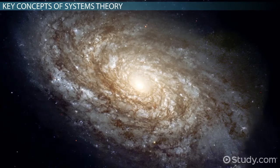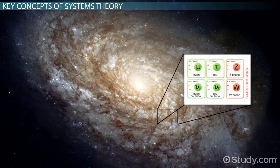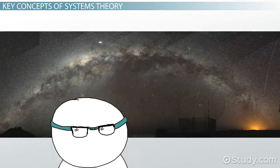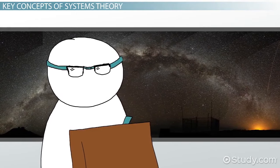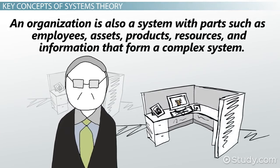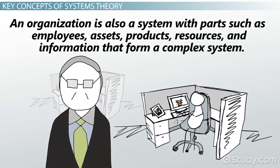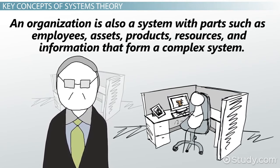Think of the universe. Its parts are as small as a subatomic particle and as large as galactic clusters. Each part is distinct but interacts to form the universe. An organization is also a system with parts such as employees, assets, products, resources, and information that form a complex system.